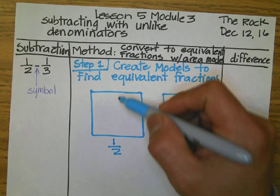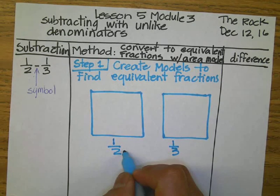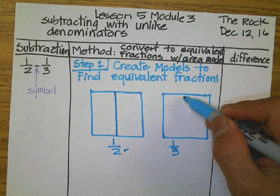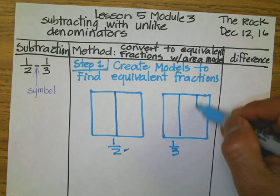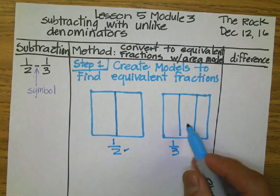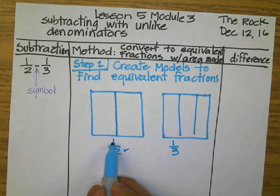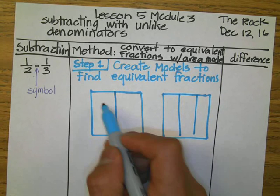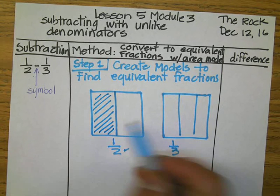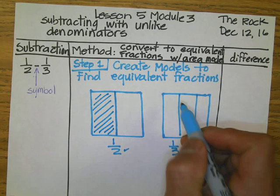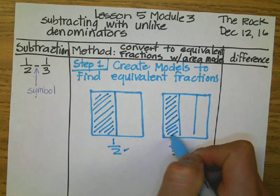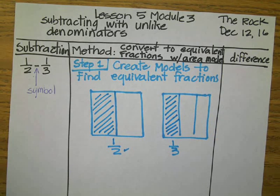One-half — the denominator tells us that this whole is divided into two parts. Unlike this one, whose denominator tells us that the model has to be divided into three parts. The numerator tells us that only one is shaded, so we're going to shade only one. The numerator on the second fraction for the subtraction is also telling us to do the same thing.